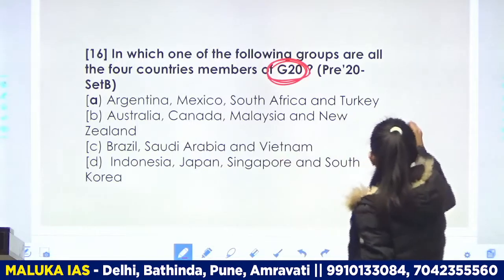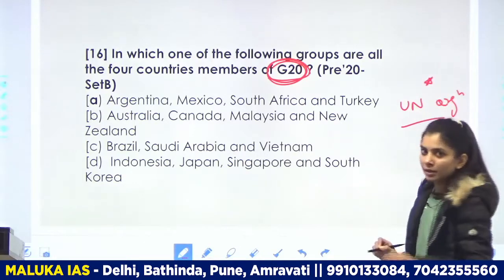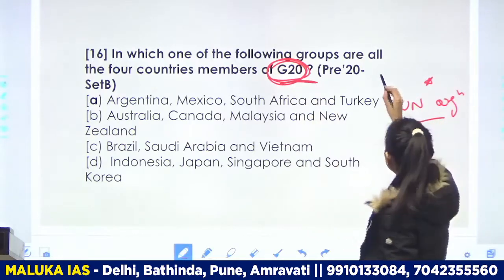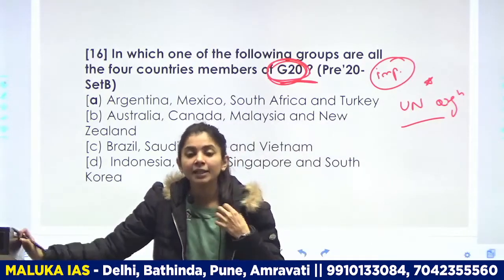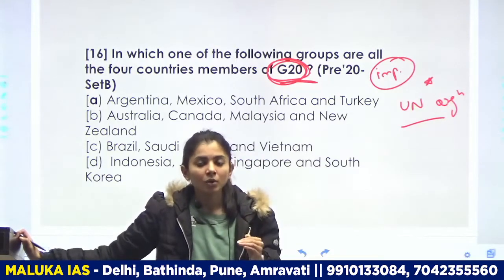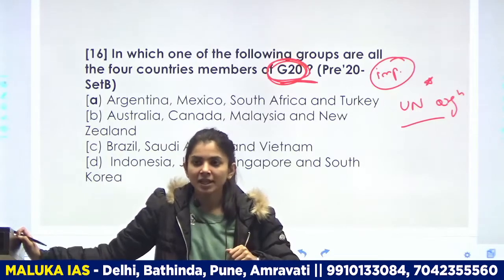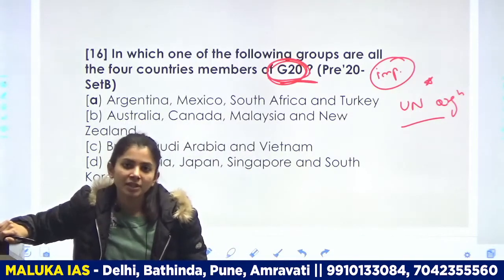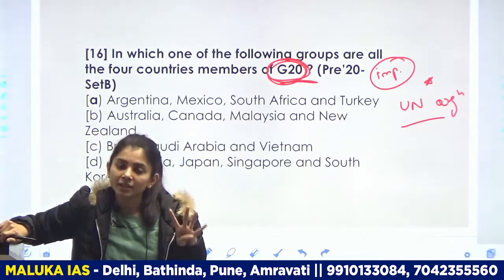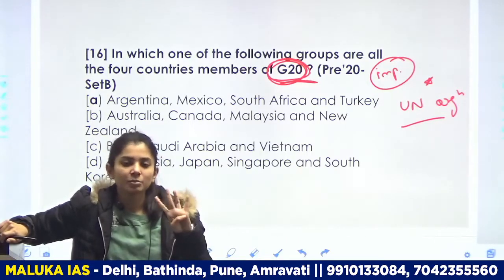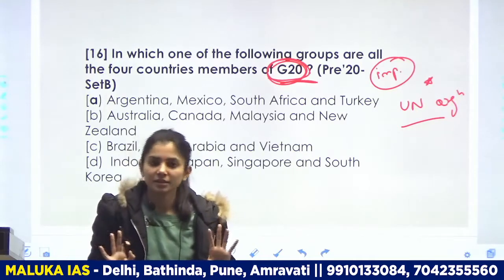Jo bhi UN ke organizations hain, woh ho jaate hain important. Saath hi saath other organizations bhi important ho jaate hain. PYQ karne se hame yeh help mili ki hum dekh saken ki kaunse organizations important hain, aur unko news ke saath cover karte jaana hai. Agar news mein G7, G20, OECD, ya FAO aata hai, toh aapko pata hona chahiye woh kis se related hai, kab bana, headquarter kahan hai, aur main working mechanism kaisa hai. Yeh 4-5 points yaad kar lene hain — answer inheen 4-5 points ki taraf revolve karega.